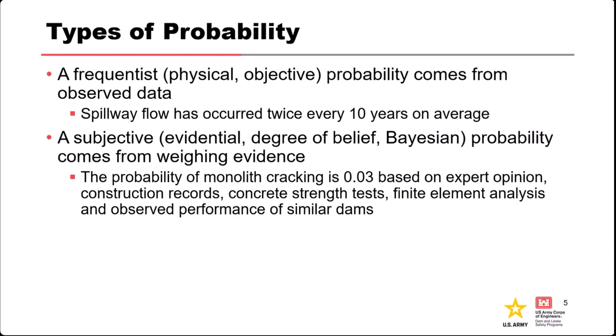One of the criticisms of Bayesian probability is that there is a subjective element to it. But the counter to that is: you need an estimate, and if you don't have any data on which to base your estimate, you have to base it on something. And this is a formal way of coming up with that estimate.